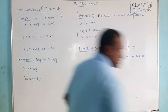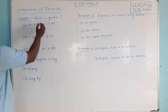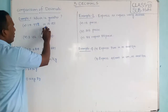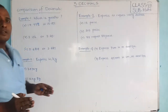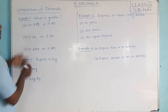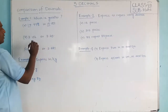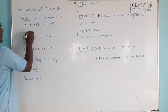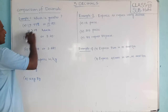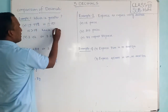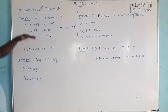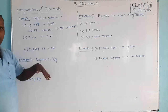Now let's start some examples. First question: which is greater — 14.998 or 15.001? As I said, first check the integral part. Here the integral part is 14, and this integral part is 15. Comparing: 15 is greater than 14. Hence 15.001 is greater than 14.998. Since the integral part is already greater, there is no need to go to the decimal places.